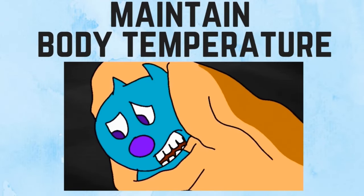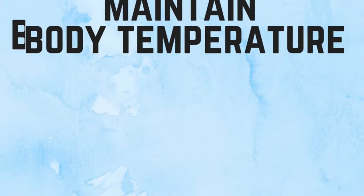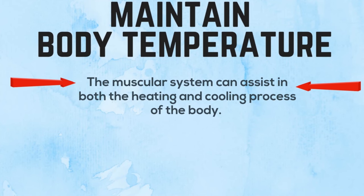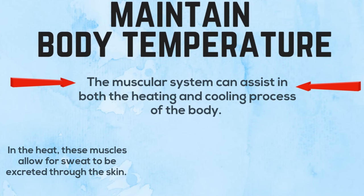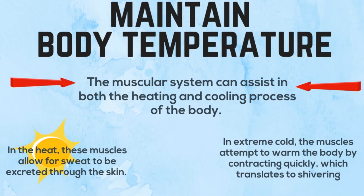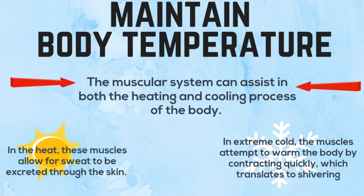Maintain body temperature. The muscular system can assist in both the heating and cooling process of the body. In the heat, these muscles allow for sweat to be excreted through the skin. In extreme cold, the muscles attempt to warm the body by contracting quickly, which translates to shivering.